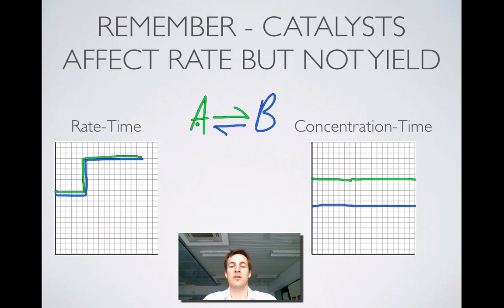In other words, if I started off with lots and lots of A and not much B, then my system would get to equilibrium much quicker if I had a catalyst, but it would reach exactly the same position of equilibrium as it would have done if I didn't have the catalyst. And I suppose that's quite an important consideration when you're an industrial chemist and you're trying to decide whether you're going to spend lots of money on using a catalyst or not. But that's for another film.